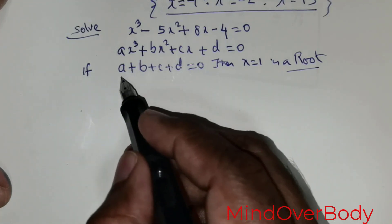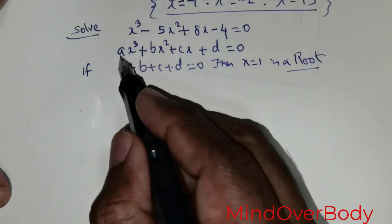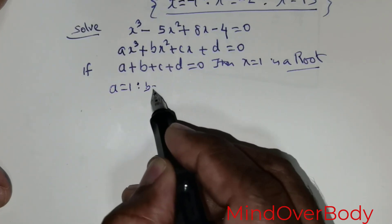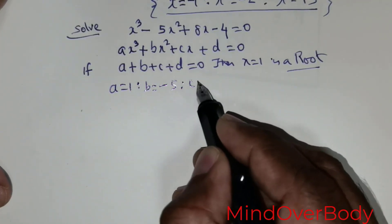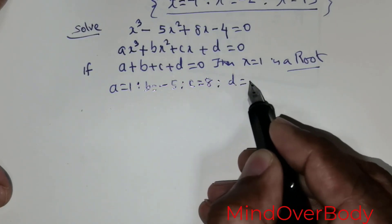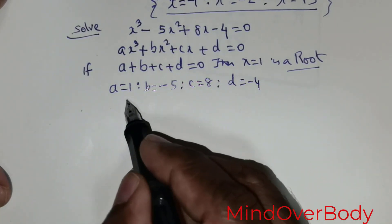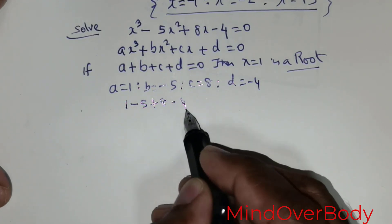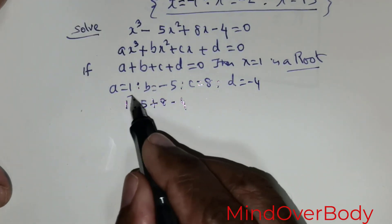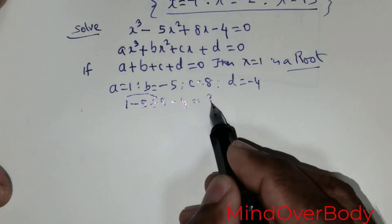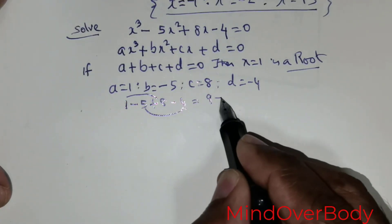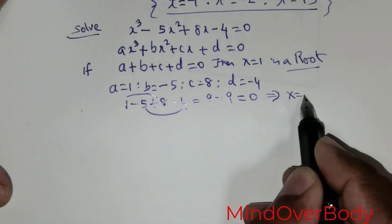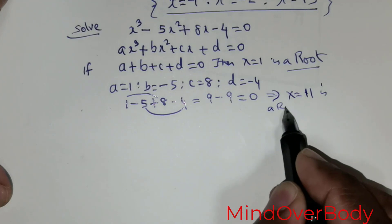Let us extract the values: a equals 1, b equals negative 5, c equals 8, and d equals negative 4. Adding them: 1 plus negative 5 plus 8 plus negative 4. That gives 1 minus 5 plus 8 minus 4, which equals 0. So this implies x equals positive 1 is a root.